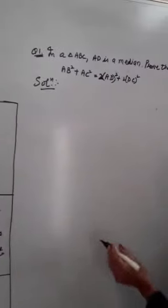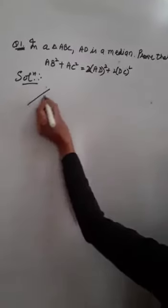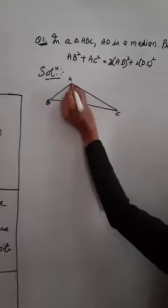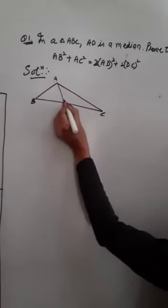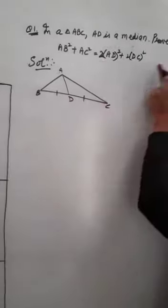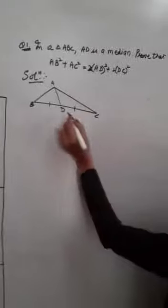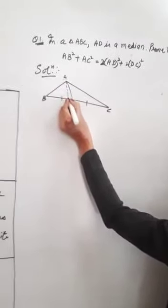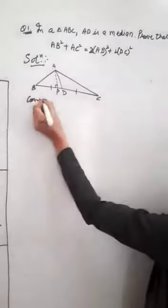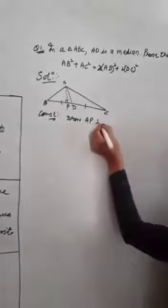Now let us use this concept in a question. In triangle ABC, AD is a median. Drawing triangle ABC with D on BC such that BD = DC — these two parts are equal. We need to prove a result involving squares. Since there is no 90 degree angle given, we will construct one. Through point A, we draw AP perpendicular to BC.